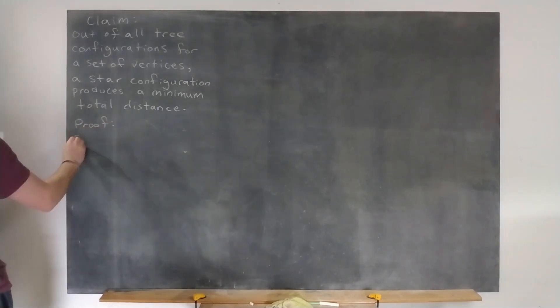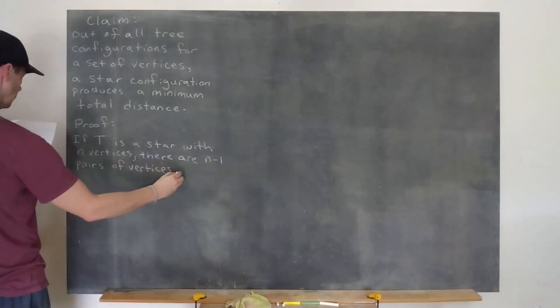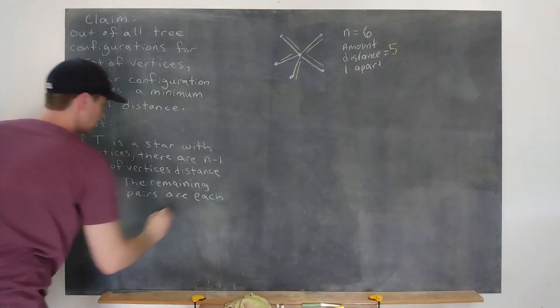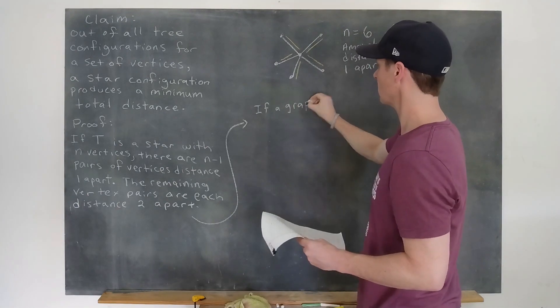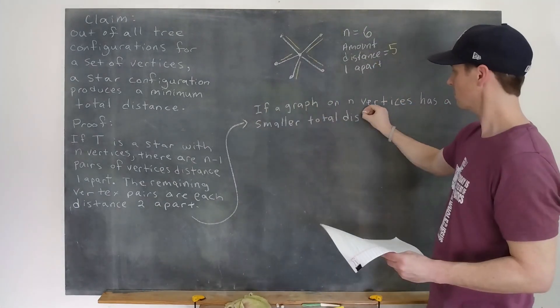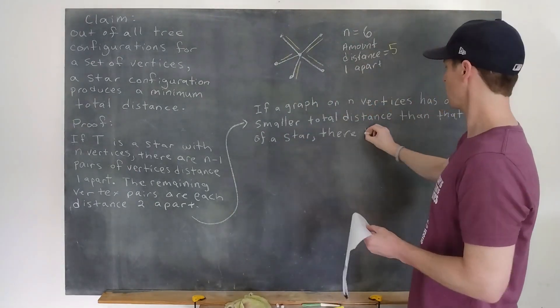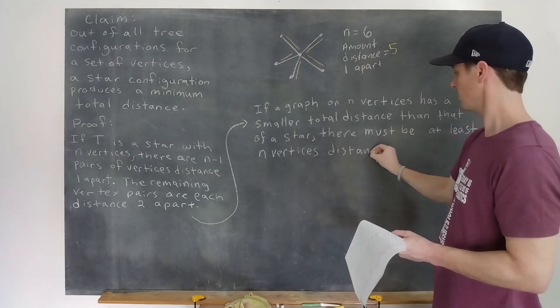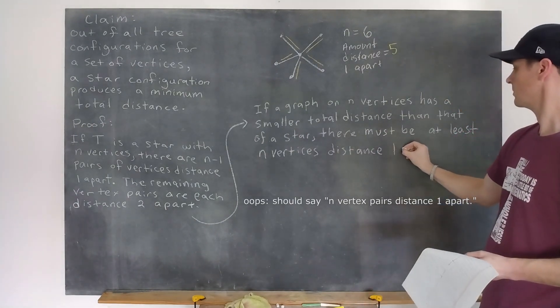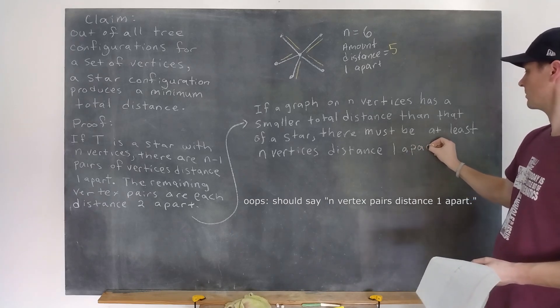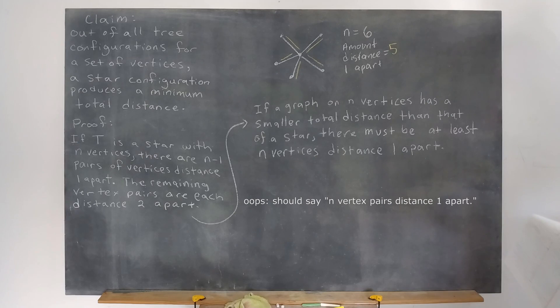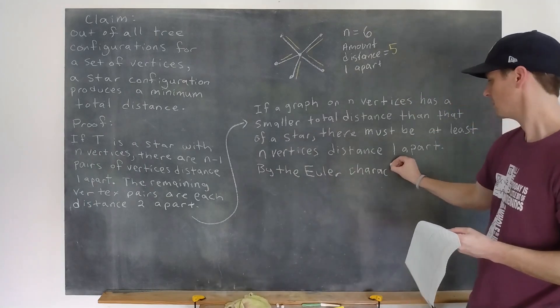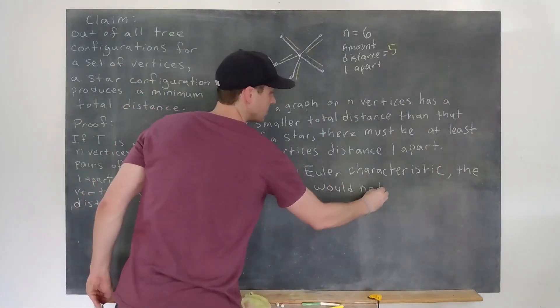For a star graph with n vertices, there are n-1 pairs of vertices that are distance 1 apart, all others being distance 2 apart. If a graph with n vertices has a smaller total distance than that of a star, then some of the pairs that are 2 apart would need to drop down to being 1 apart, and we'd end up with a graph that has at least n pairs of vertices being distance 1 apart. But what does that mean? Our graph would have to have at least n edges forcing us into a situation where we have a graph with more than one face, which wouldn't be a tree.